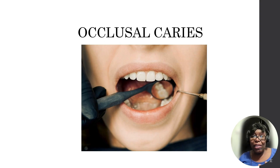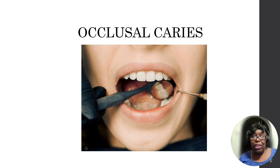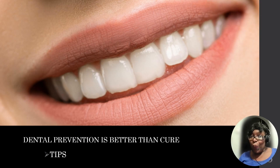As it progresses, it becomes brown, and then if you keep ignoring it, it becomes a cavity. There are times people ignore it completely and it becomes really black. When the decay is black, it means the tooth has tried to repair itself. That is why it's important to catch it at the early stages — you can help repair the tooth by eating less sweets or seeing your dentist to guide you.